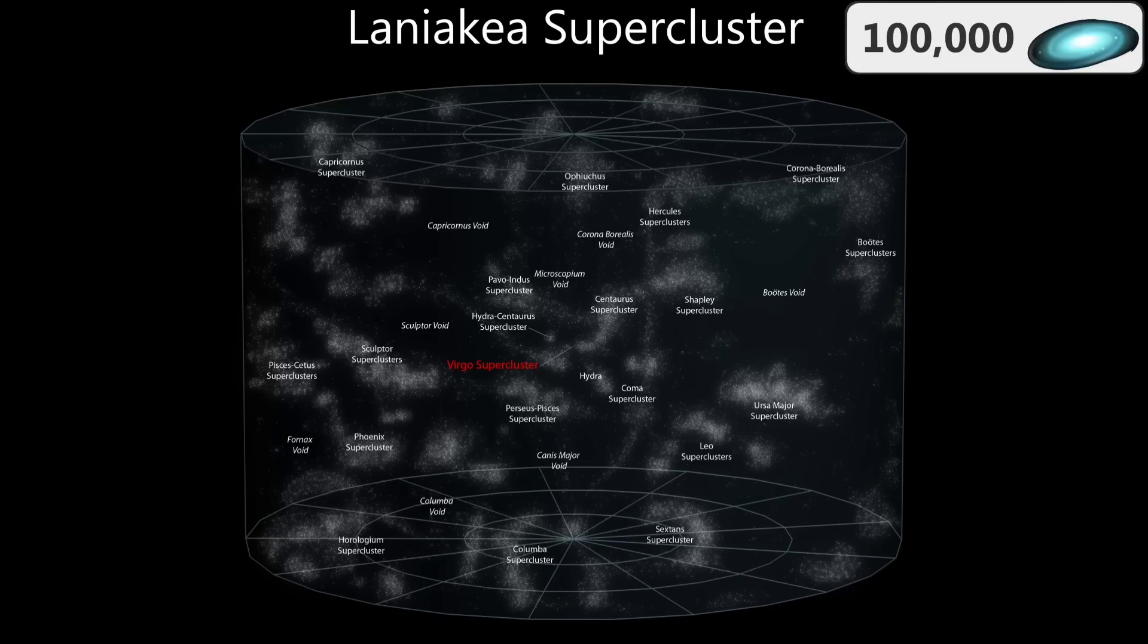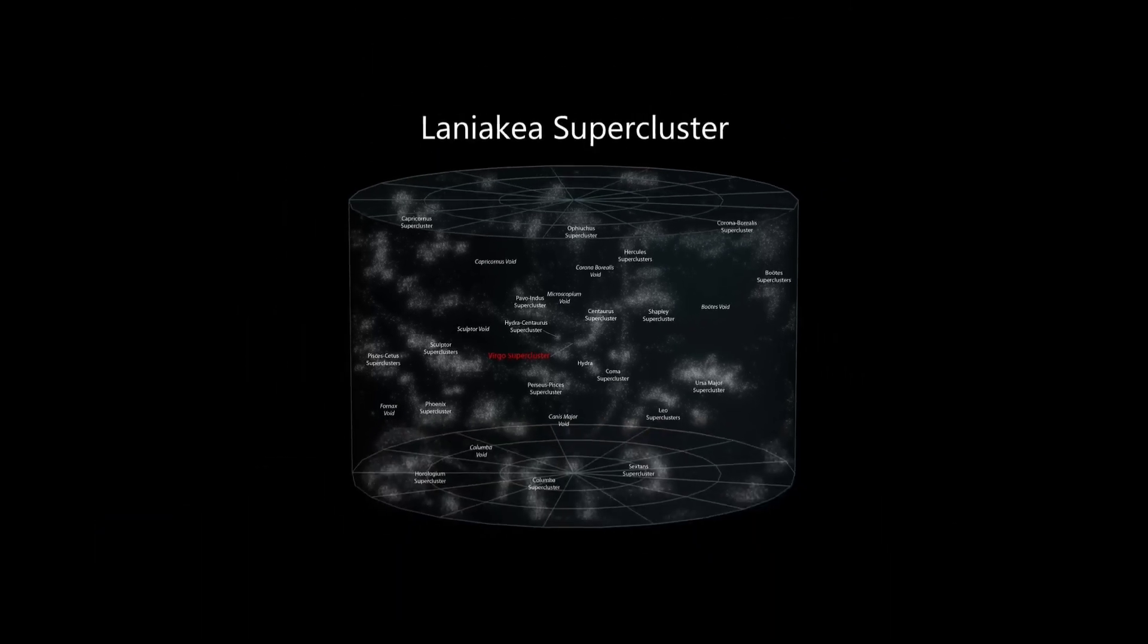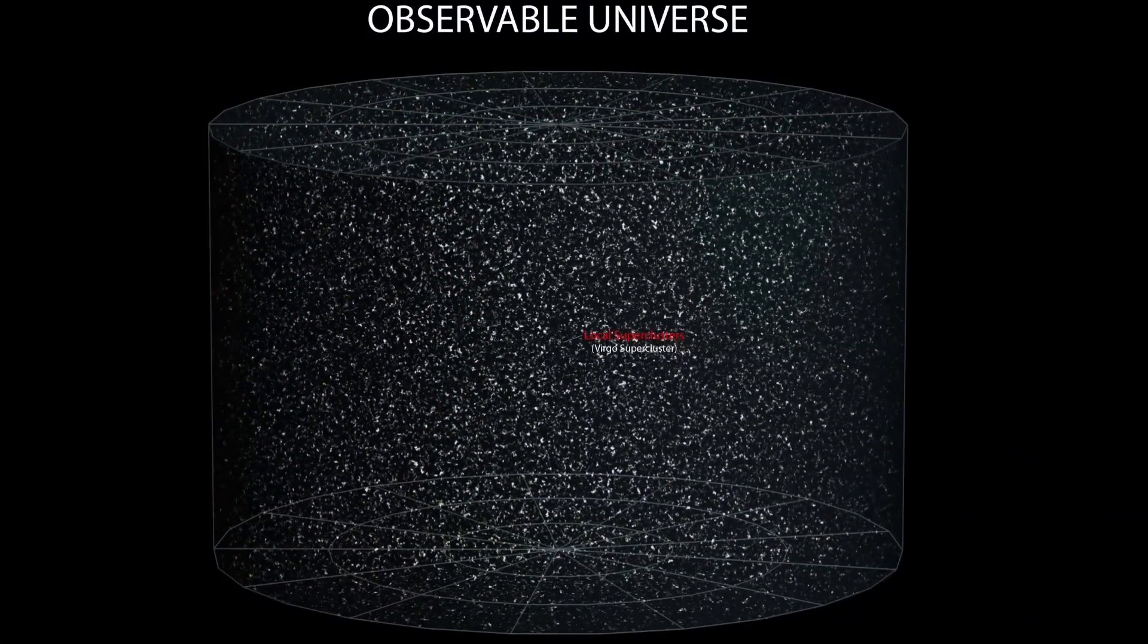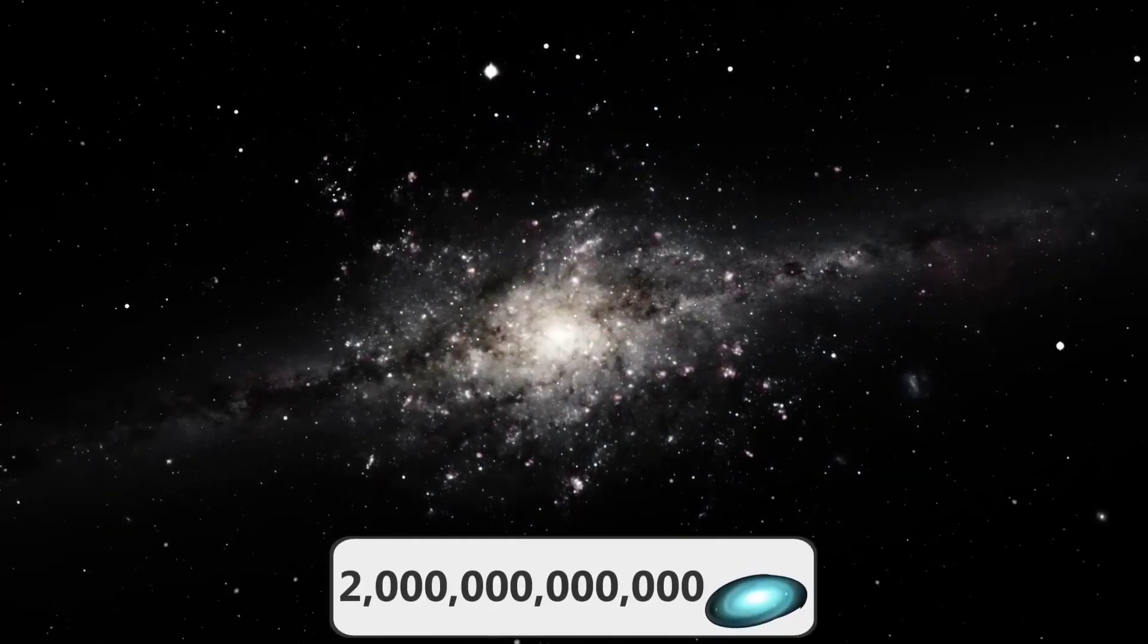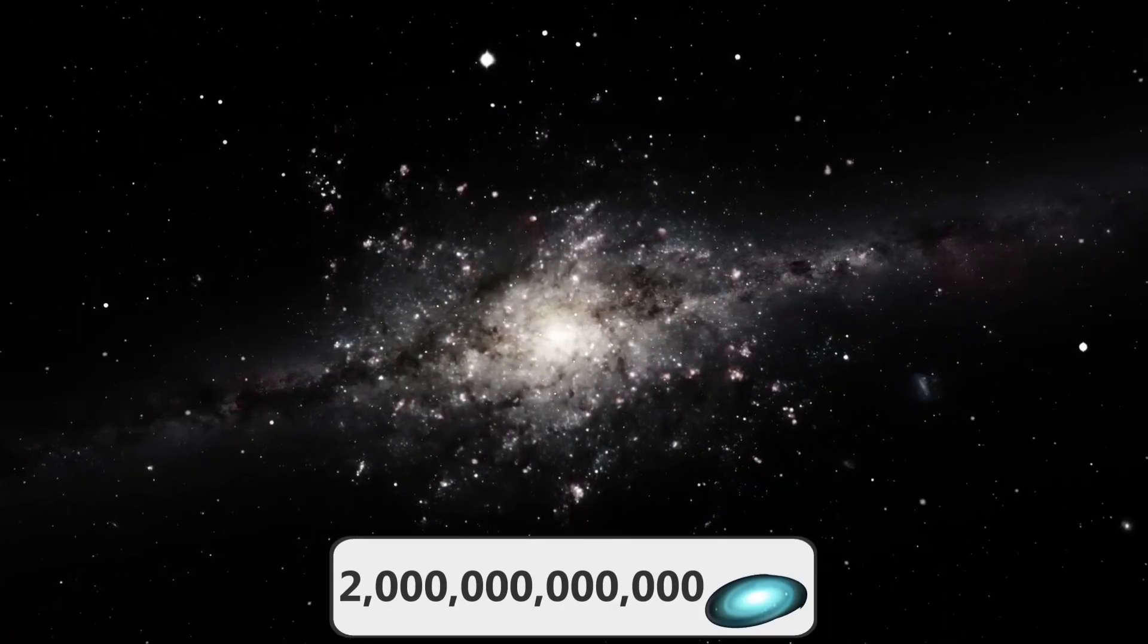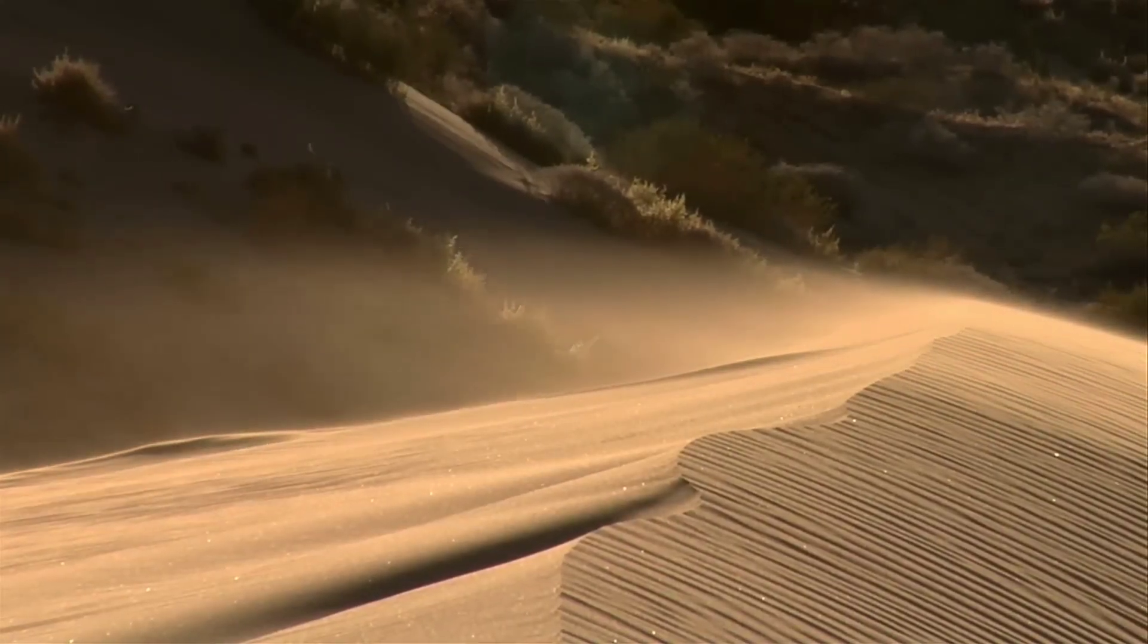But from even there we can zoom out all the way to the entire observable universe and see that even the titanic Laniakea Supercluster is just a tiny and insignificant part of everything. This is the observable universe and it contains everything that we know of. It is home to at least two trillion different and individual galaxies, which together contain more stars than there are grains of sand on the entire Earth. The distance from Earth to any side of the observable universe is 46.5 billion light years, which means that the entire width is 93 billion light years across.